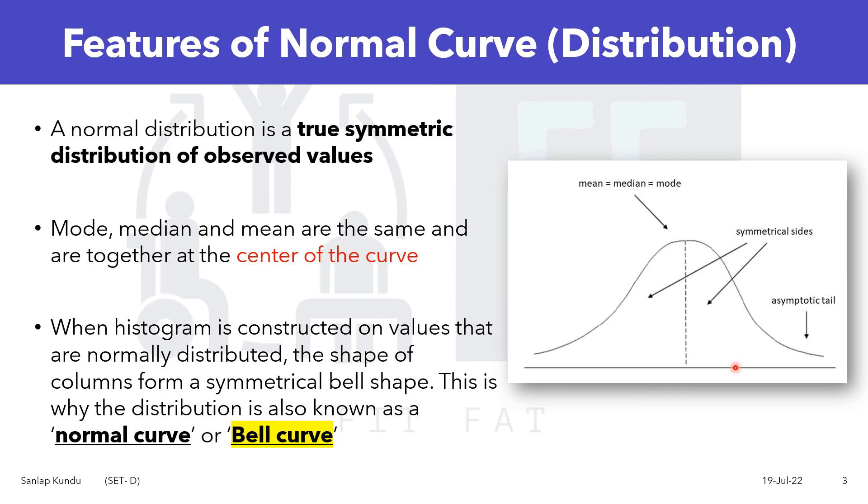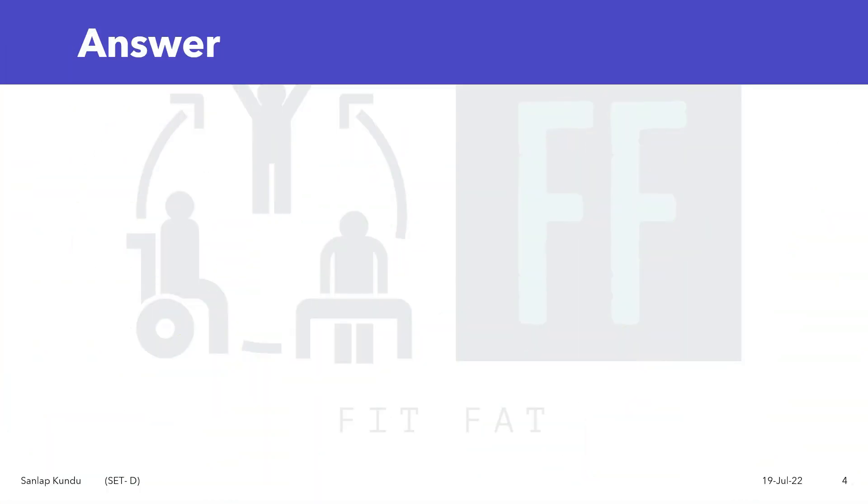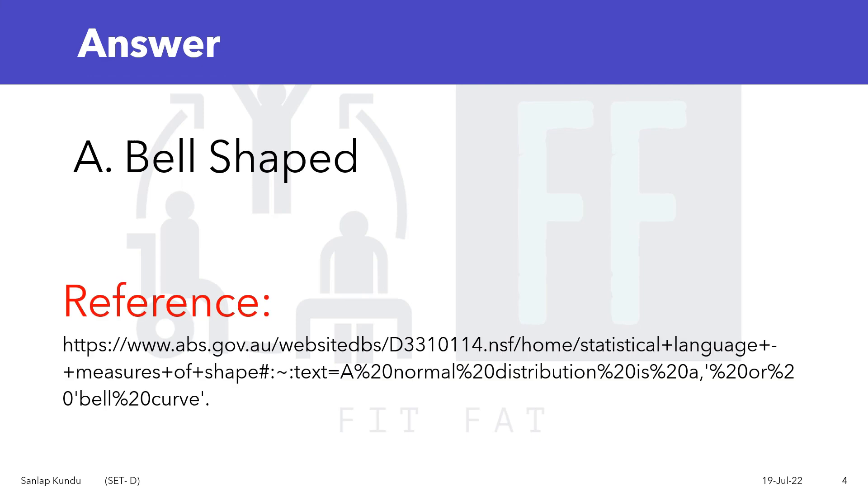But in case of an asymmetrical distribution, the two sides will not be mirror images of one another. So the answer to the question is option A: bell shaped. Now you can check this reference.